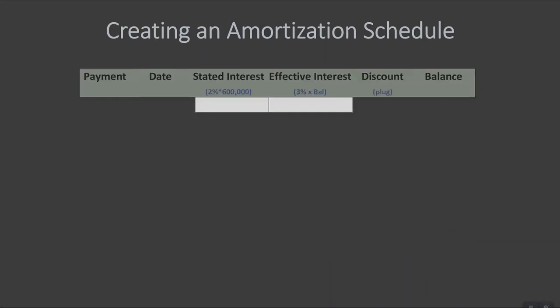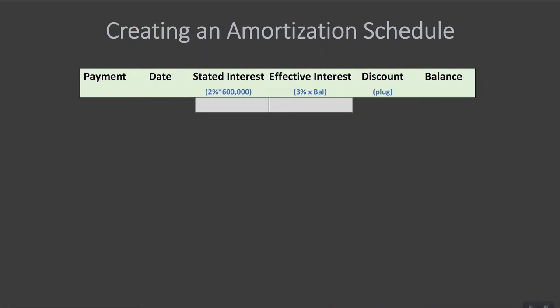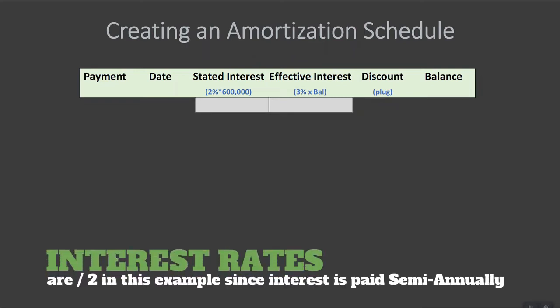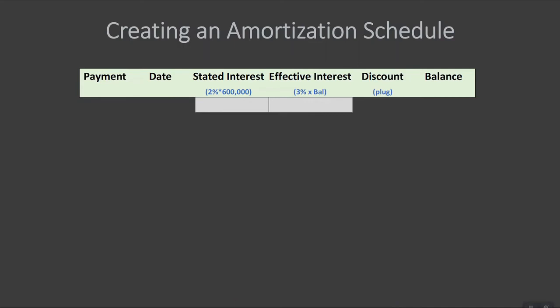Let's work through an amortization schedule so we can see how this bond flows out through the entire time. When setting up your amortization table in Excel, you have your payment number — we know we need ten payments — the date of our payments, the stated interest rate (in this case 2%, which is one half of 4% for six months), the effective interest which is your balance times your effective interest rate at 3% since we're semi-annual, the discount, and the balance amount. Our original present value balance was $548,818 with our discount of $51,182.